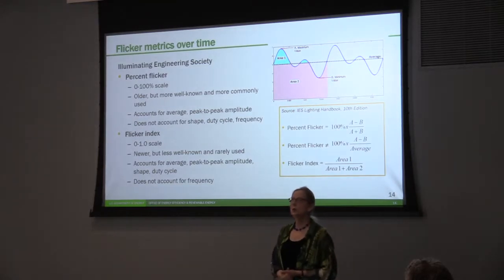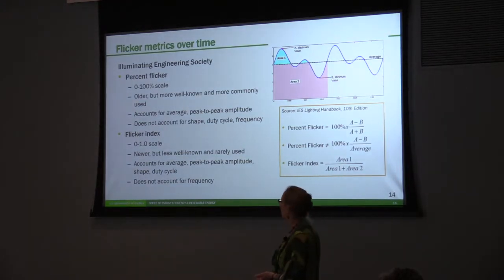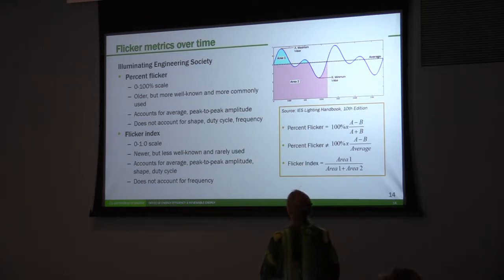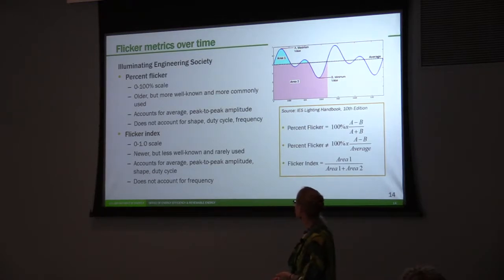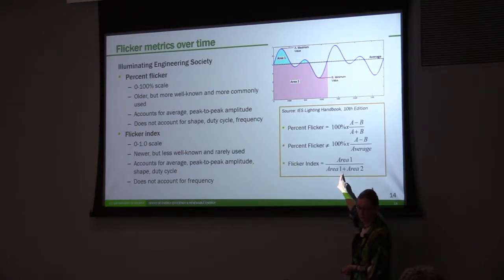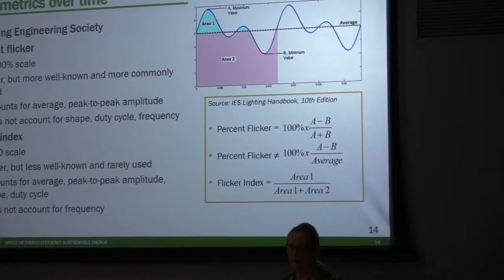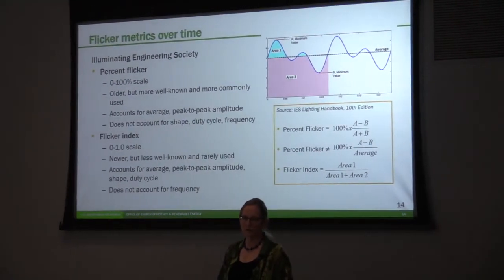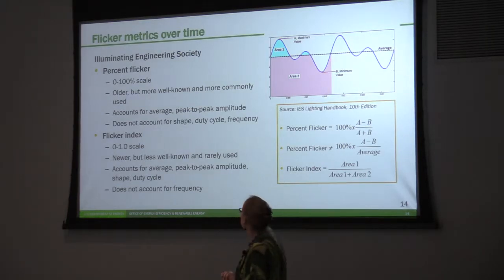There are two flicker metrics used in the IES handbook: percent flicker and the flicker index. Percent flicker has a 0 to 100% scale but does not account for frequency, waveform shape, or duty cycle — so it's inadequate. The flicker index looks at the area above the average light output divided by the sum of the areas above and below the light output. That's a little better but harder to use, and it involves calculus. As a result, flicker index isn't used as much as percent flicker.